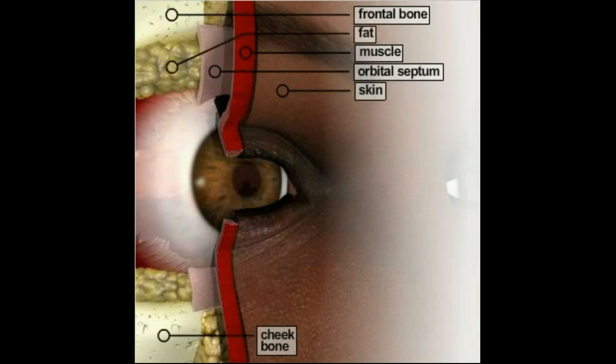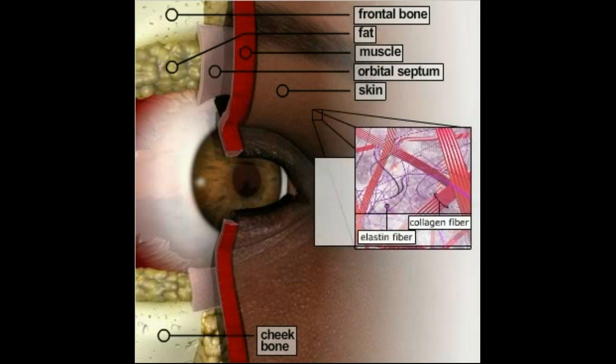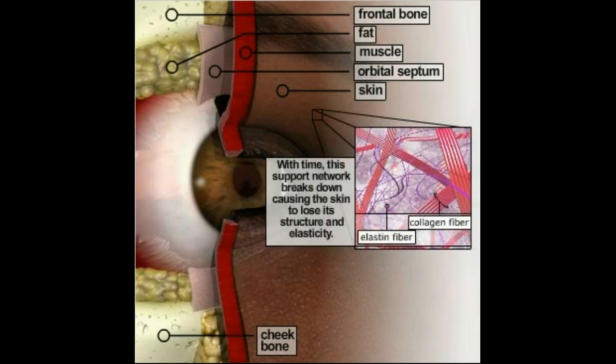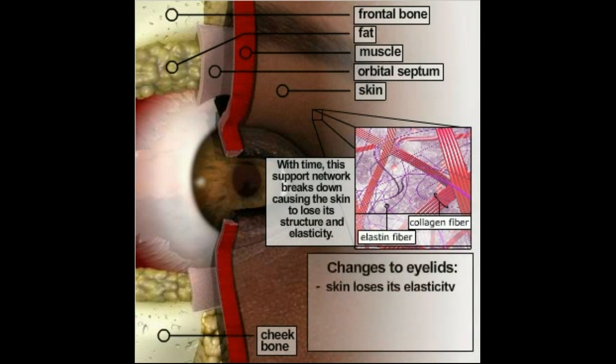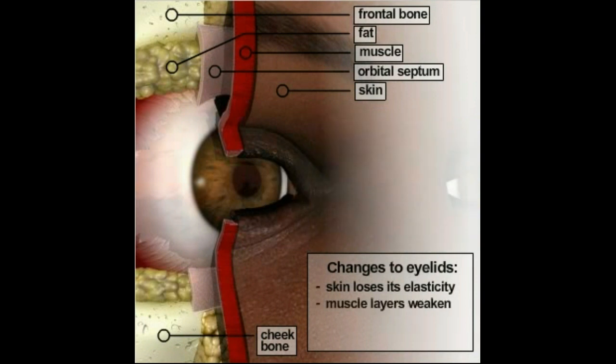With time, age and environmental factors like sun damage cause the skin's support network in the dermis to break down. As a result, the skin loses its structure and elasticity and becomes lax. The muscle layers also weaken, which with the skin's loss of elasticity and the effects of gravity, cause the eyelids to droop and sag.